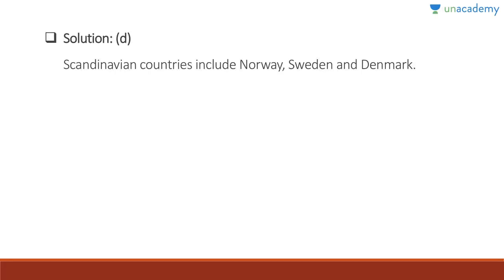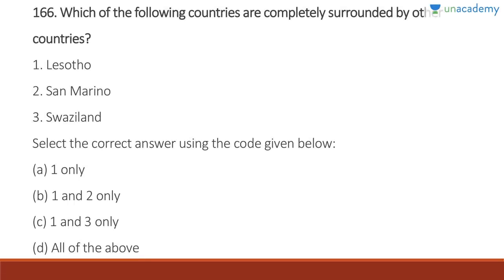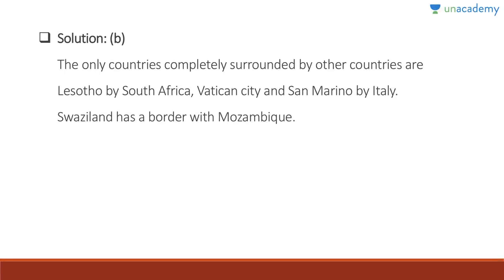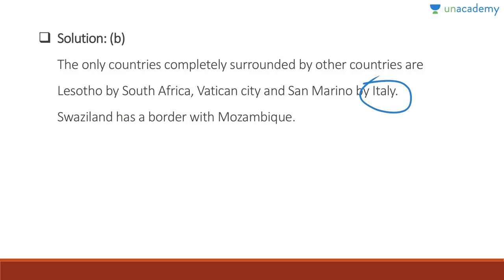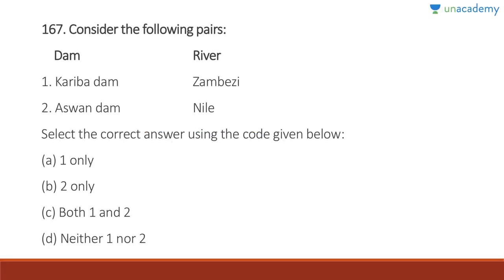Question 166: Which countries are completely surrounded by other countries? Lesotho is completely surrounded by South Africa. Vatican City and San Marino are completely surrounded by Italy. Swaziland shares a border with Mozambique, so it is not completely surrounded. Answer is B, one and two only. Lesotho is surrounded by South Africa, and Vatican City and San Marino are surrounded by Italy.